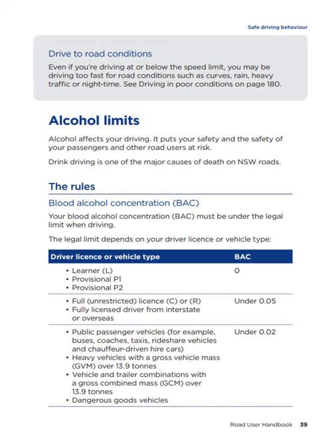Alcohol limits. Alcohol affects your driving. It puts your safety and the safety of your passengers and other road users at risk. Drink driving is one of the major causes of death on NSW roads. The rules — blood alcohol concentration: your blood alcohol concentration must be under the legal limit when driving. The legal limit depends on your driver licence or vehicle type. For learners, provisional P1 and provisional P2 licence holders, the blood alcohol concentration is zero. For a full unrestricted licence, C-class or rider, or fully licensed driver from interstate or overseas, the blood alcohol concentration is under 0.05.